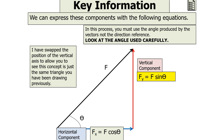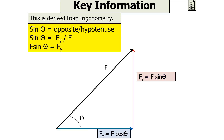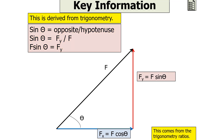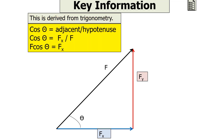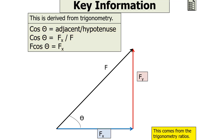These come from trigonometry. We know that sin theta equals opposite over hypotenuse. In this case, when we look at the angle, the opposite is the vertical component Fy and the hypotenuse is the resultant F. Rearranging, we get Fy equals F sin theta. Similarly, cos theta equals adjacent over hypotenuse. The adjacent is Fx and the hypotenuse is F, so cos theta equals Fx over F, and therefore Fx equals F cos theta. These equations both come from trigonometric ratios.